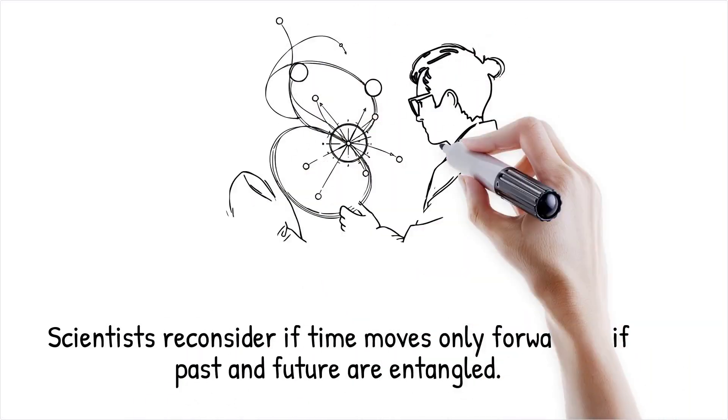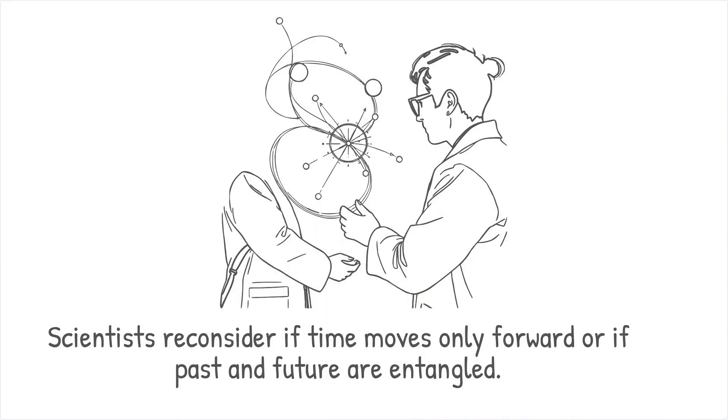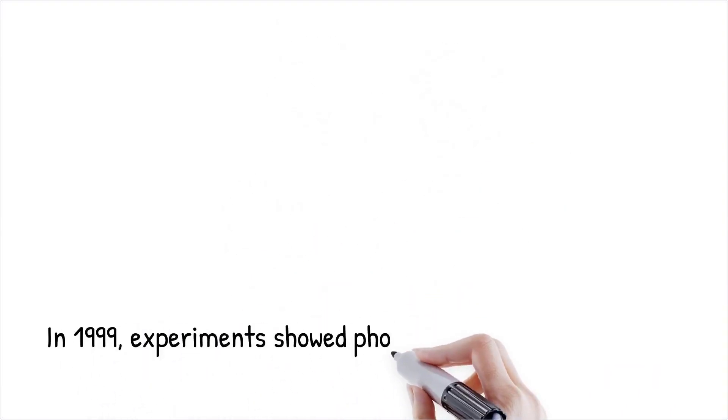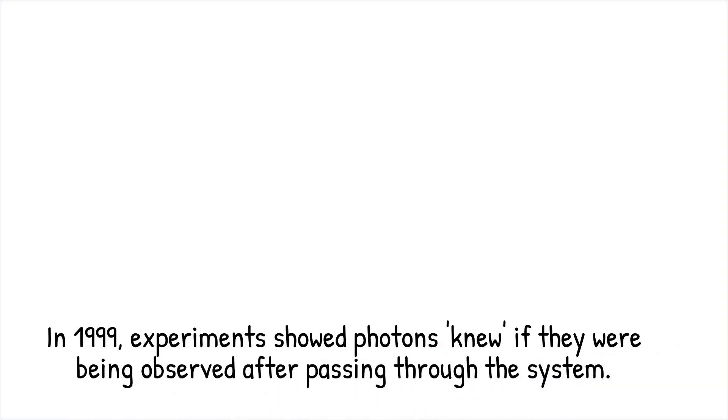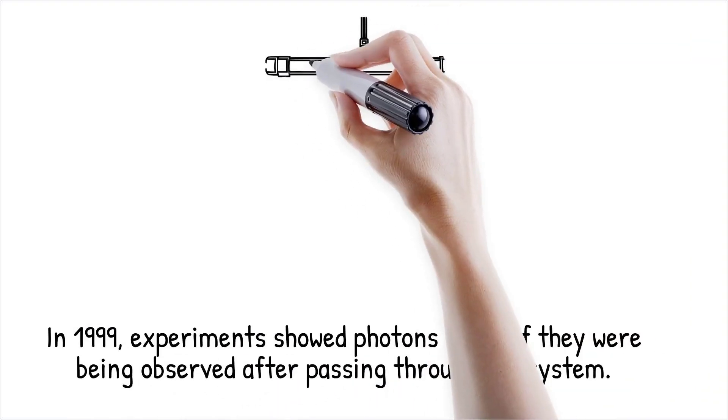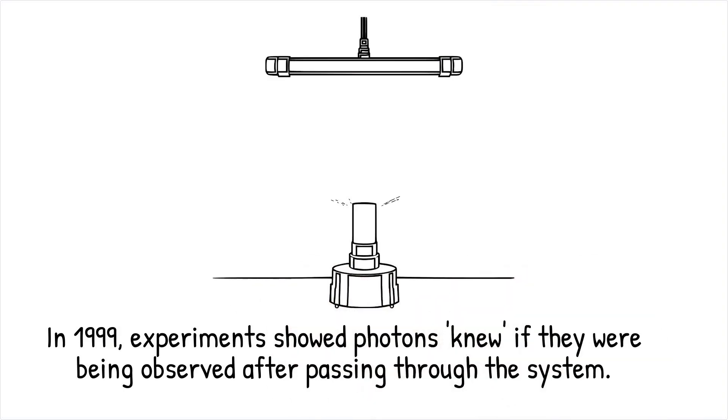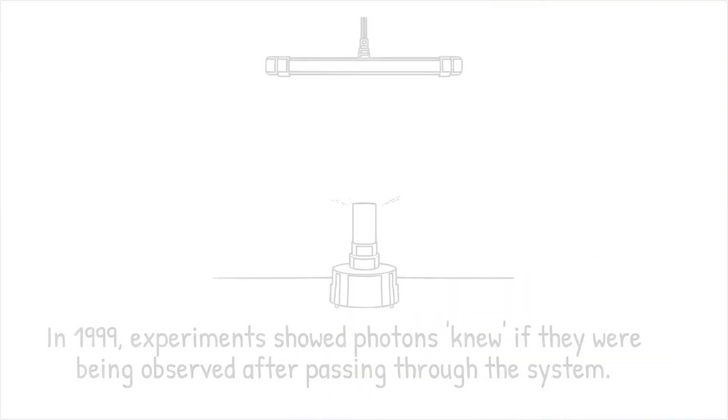In 1999, physicists conducted a version of this experiment and found that photons, particles of light, appeared to know whether they were being observed even after they had already passed through the experimental setup.